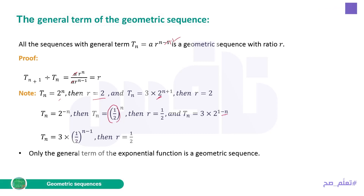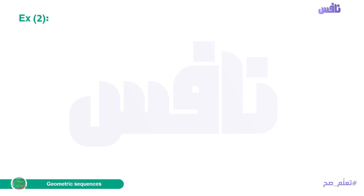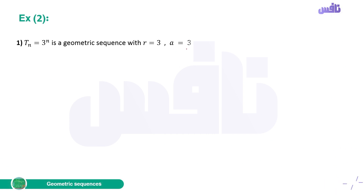Only the general term of an exponential function is a geometric sequence. In example 2, Tn = 3^n is a geometric sequence. R is the base, so R equals 3. To find A (the first term), substitute n=1: 3^1 equals 3. So A equals 3.